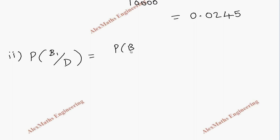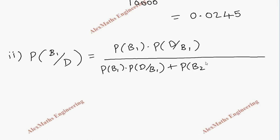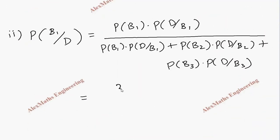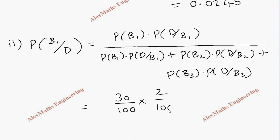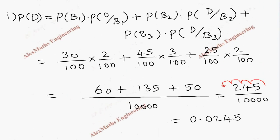So the formula for this is, we have to write the numerator part P of B1 into P of D by B1. Now P of B1, we have written a value which is 30 by 100. And the defective from B1, the value is 2 by 100. Now we have already calculated the denominator part in the previous subdivision.